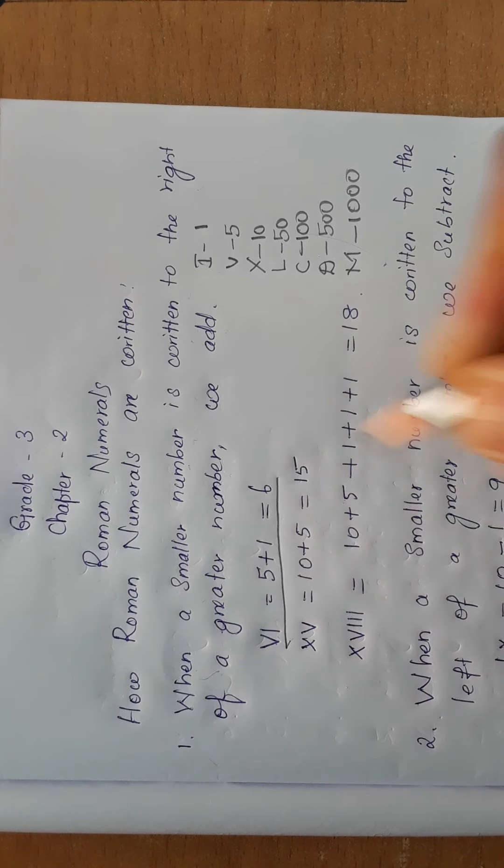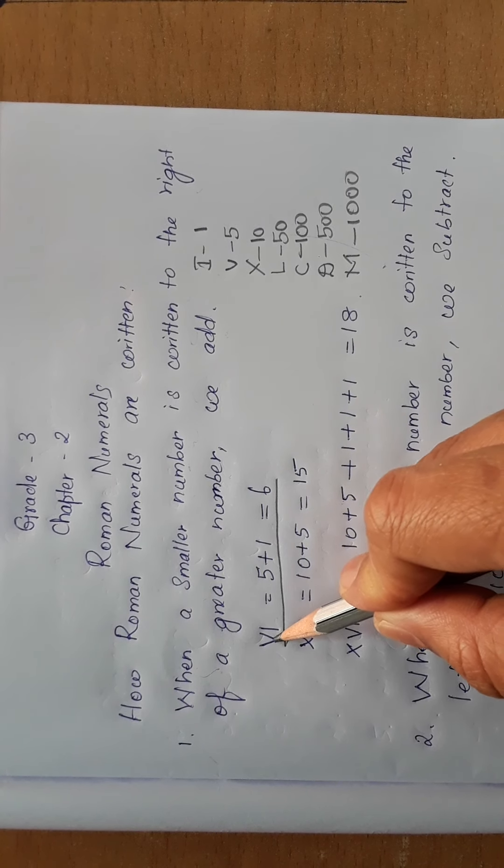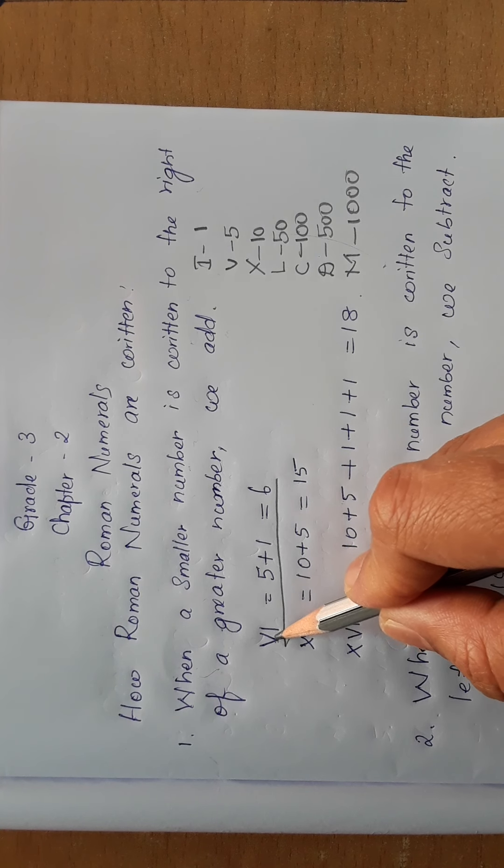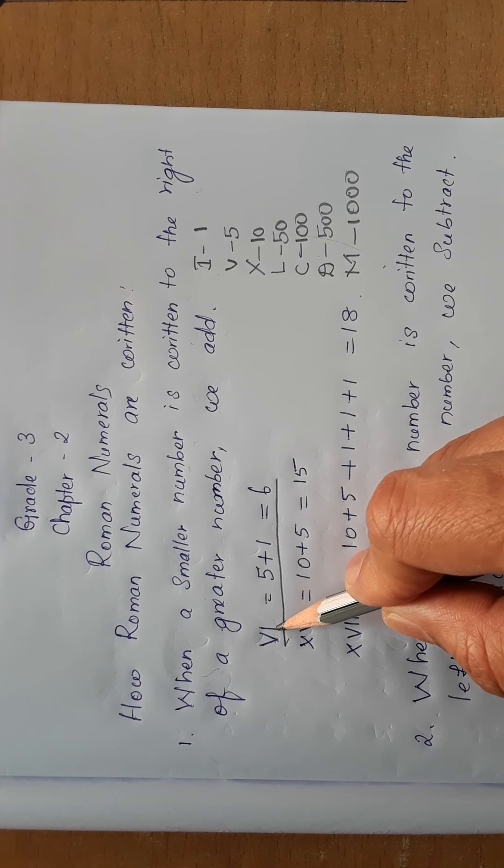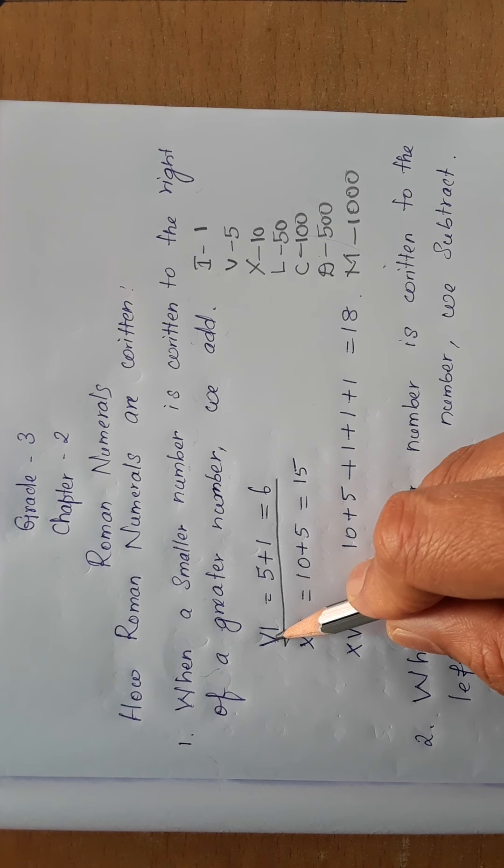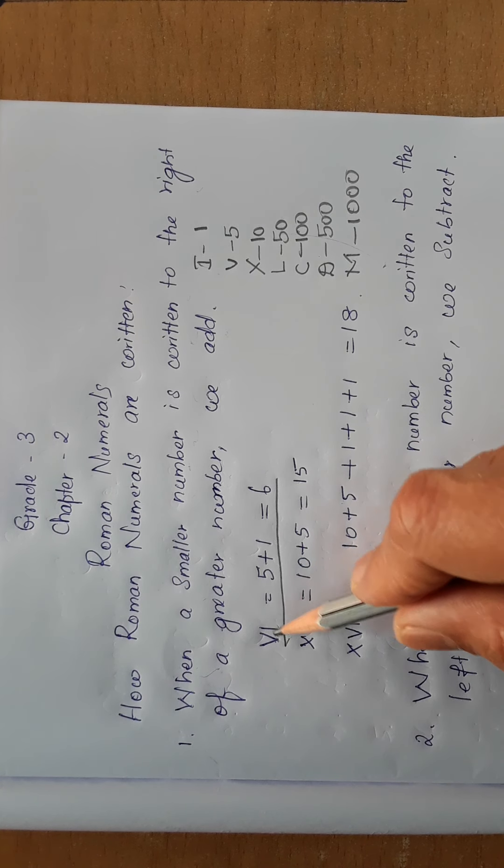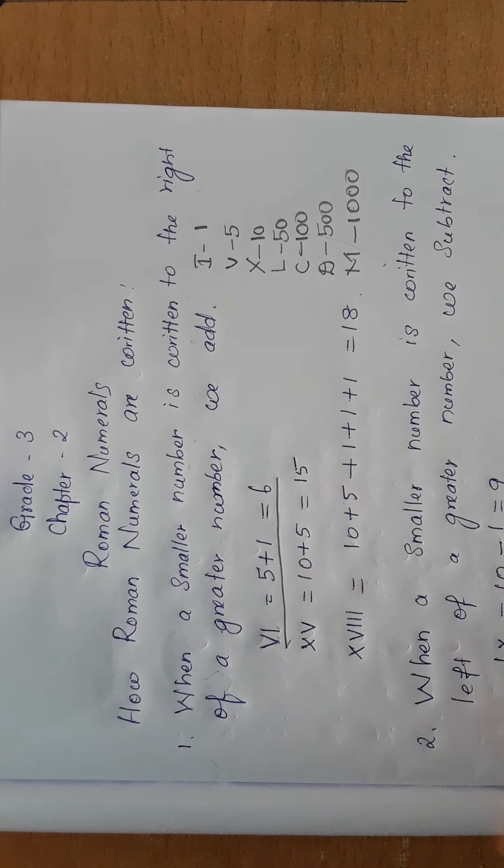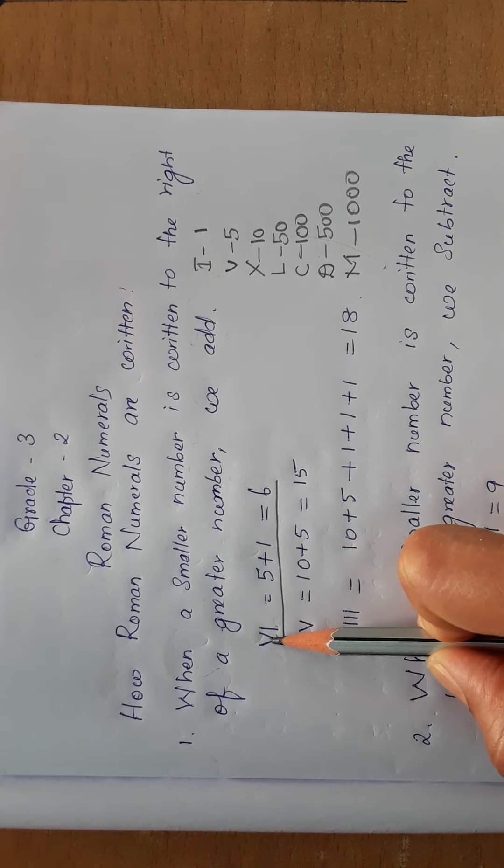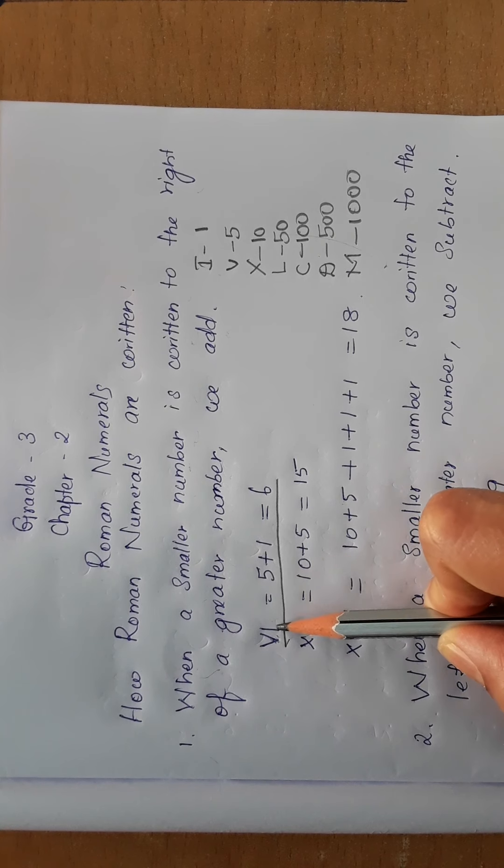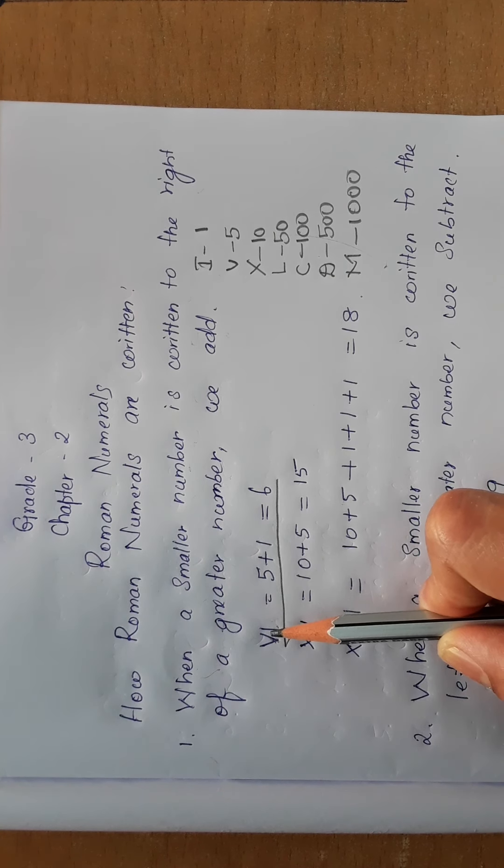We will take this as an example: V and I. V we know is 5, it is a greater number. This I is 1. So the smaller number is written to the right of the greater number. 5 is the greater number and smaller number is written to the right of the greater number, so what we will do now is we should add it.